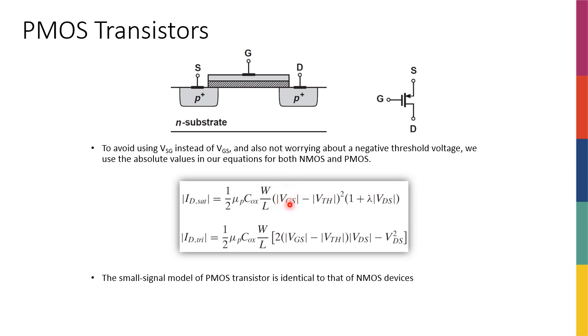You can use the absolute value of the threshold voltage so that you don't care about if it's negative or positive. If you actually use this expression, it works for both NMOS and PMOS, so you don't have to worry about using the signs properly, and if you have to put a negative here or positive here because the threshold is negative.